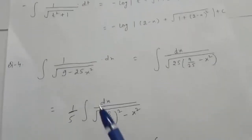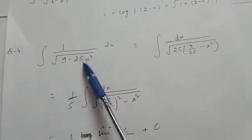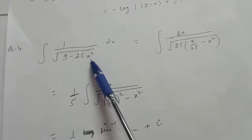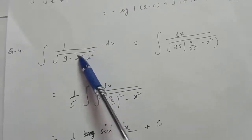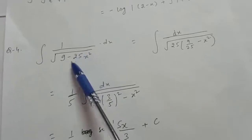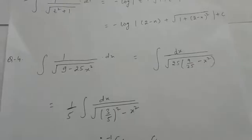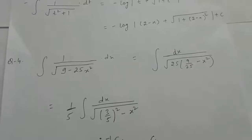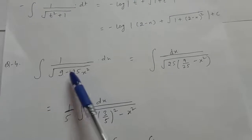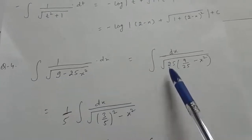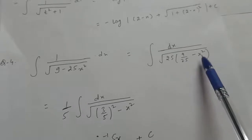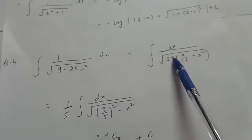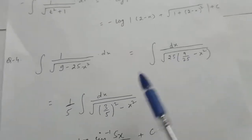Question 4th is the integral of 1 upon root (9 minus 25x²). Here the coefficient of x² is minus 25. Take 25 common from both terms to get root of 25 times (9/25 minus x²), and root 25 equals 5.